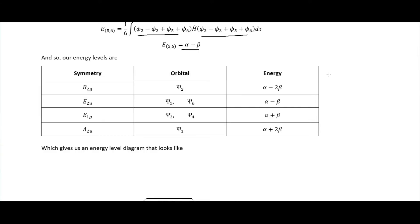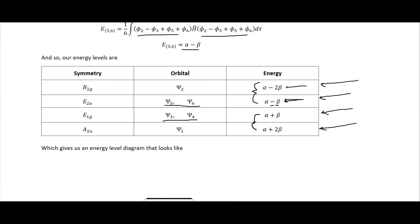Our four energy levels are: α + 2β (lowest), α + β, α − β, and α − 2β (highest). The α + β level holds ψ₃ and ψ₄, and α − β holds ψ₅ and ψ₆. The top two levels are higher than α, which is the atomic orbital energy — these are antibonding MOs. The bottom two levels are lower than α — these are bonding MOs.